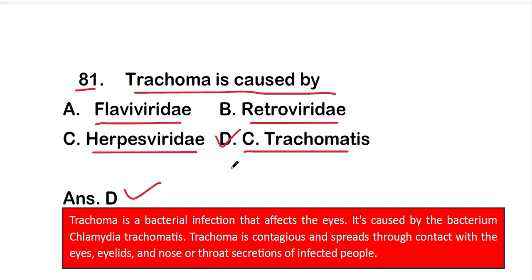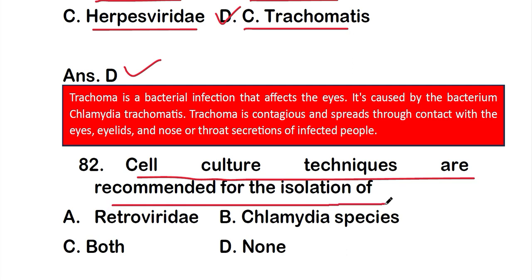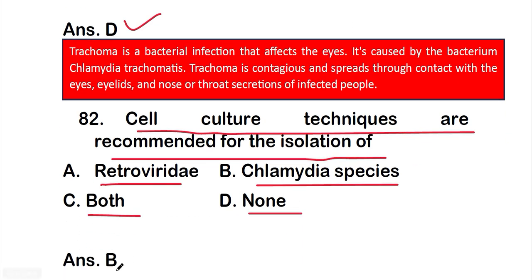Trachoma is contagious and spreads through contact with the eyes, eyelids, and nose or throat secretions of infected people. Question number 82: cell culture techniques are recommended for the isolation of option A, Retroviridae; option B, Chlamydia species; option C, both; option D, none. The right answer is option B — Chlamydia species.